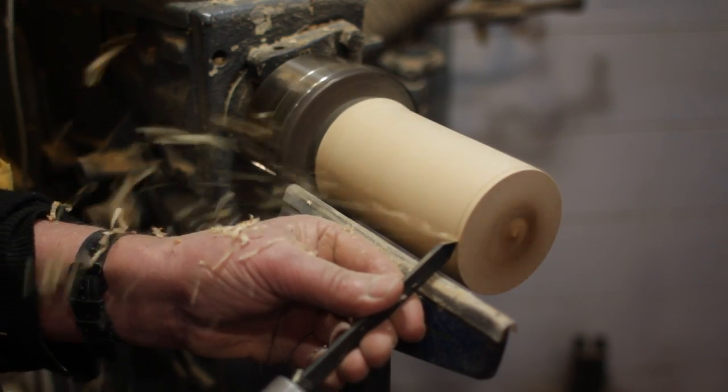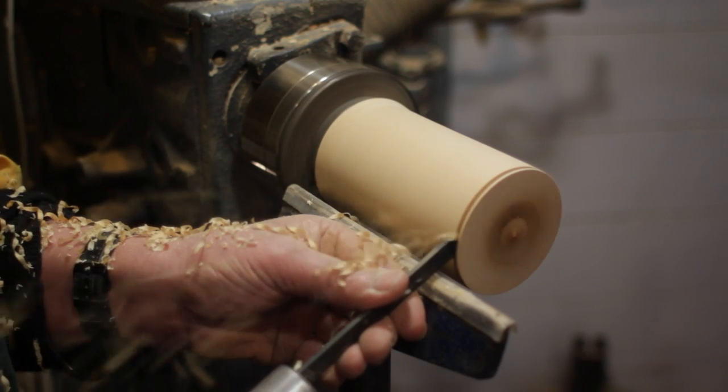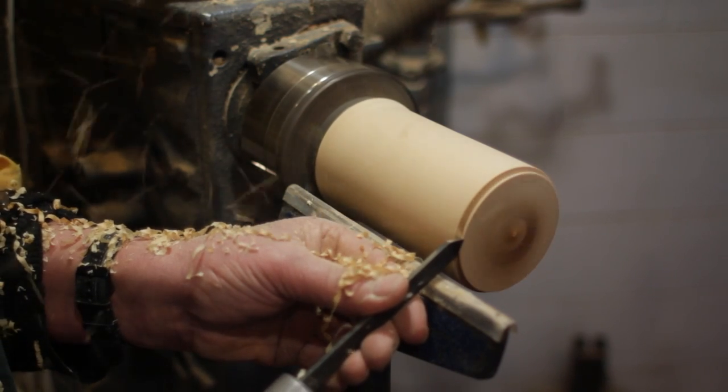Now to define the right hand end of the sphere we take the parting tool and make a three-eighths of an inch incision.